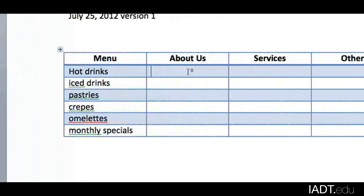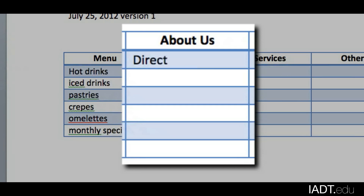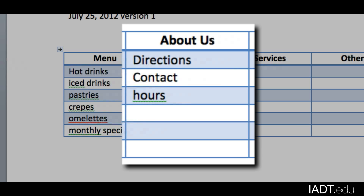For About Us, you can provide some directions to the establishment, some contact information — email, phone, things like that — the hours of operation, and since a lot of people like to connect to businesses via social media, we can include a link to the Facebook page and also Twitter. Those are the two big ones right now.